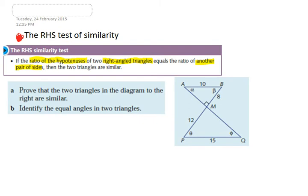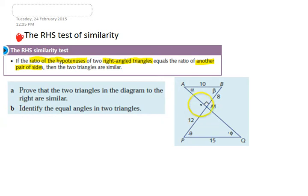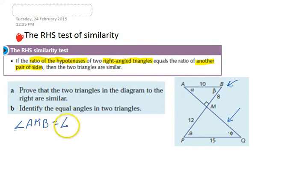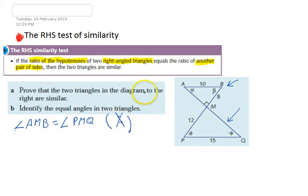If we run through an example, it might become clearer. We've got two triangles in the diagram. We need to prove they're both right-angle triangles. We can see the top one is a right-angle triangle. For the bottom one, angle AMB equals angle PMQ because they're vertically opposite — like a pair of scissors. If one is a right angle, then the other must be too. So we've proven it's a right angle, meaning we can test using the RHS method.